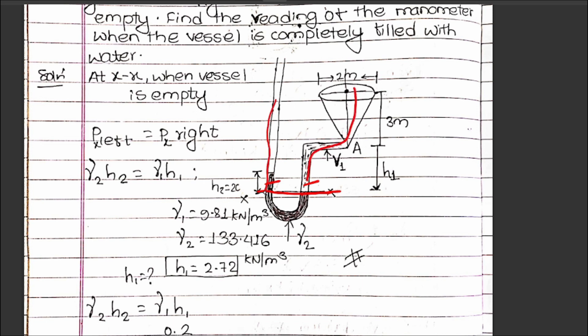The pressure on the left limb and right limb of the manometer must be equal. The pressure is simply given by the expression: pressure equals gamma times h, where h is the height.